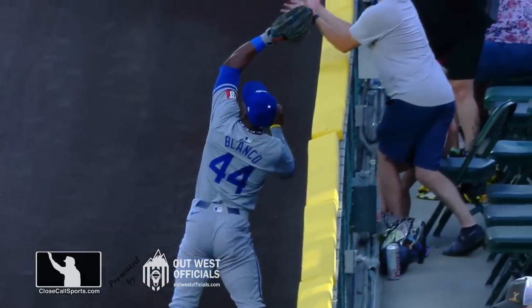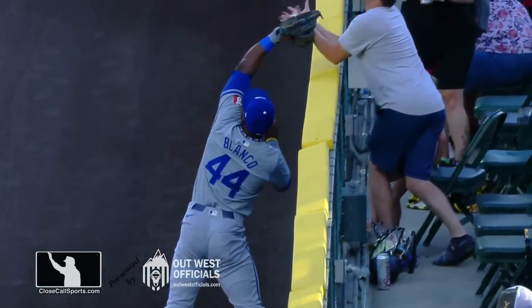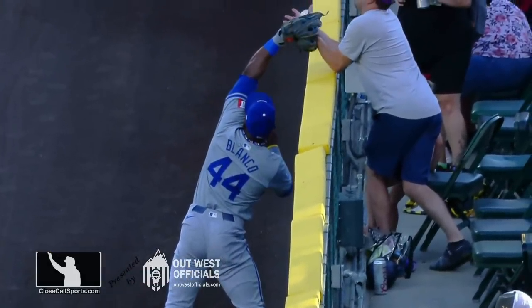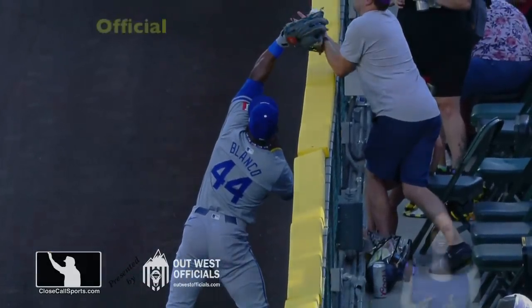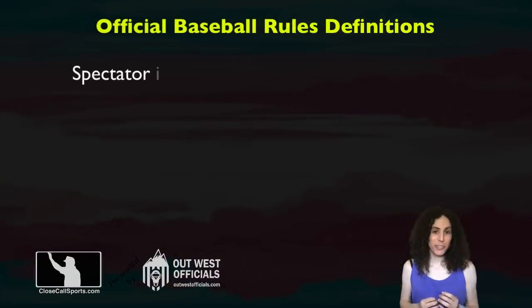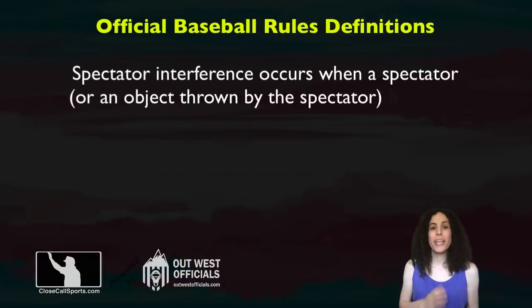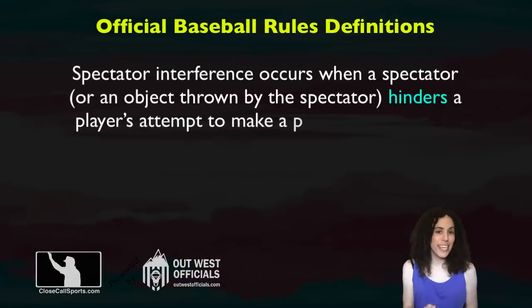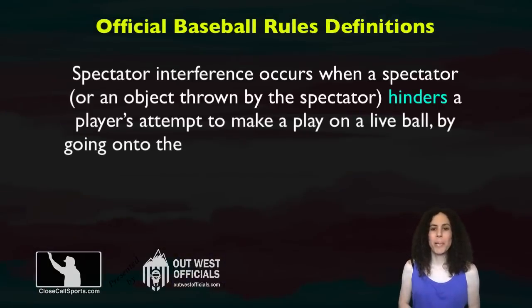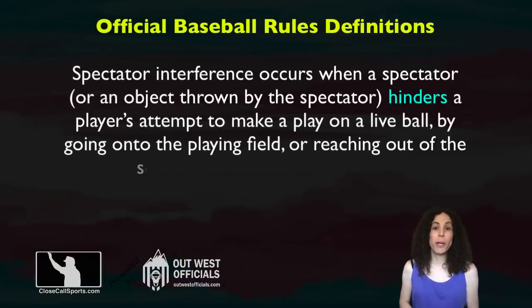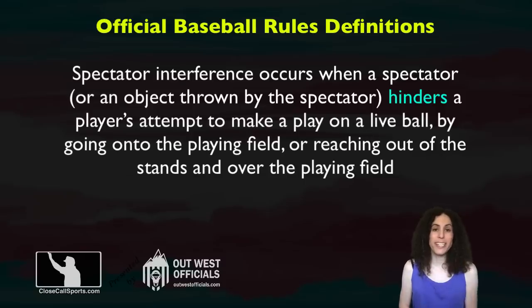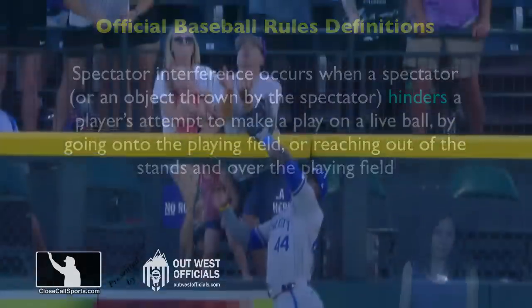Results are being well into the field of play. Spectator interference occurs when a spectator or object thrown hinders a player's attempt to make a play on a live ball by going onto the field or reaching out of the stands and over the playing field.